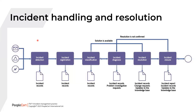Communications to stakeholders should be updated whenever there are changes in the status of an incident. We will delve into each activity in detail. The outputs of activities in this process include incident records, problem investigation requests, change requests, updates to the knowledge base, and incident reports — these are outputs across some or all of the activities.